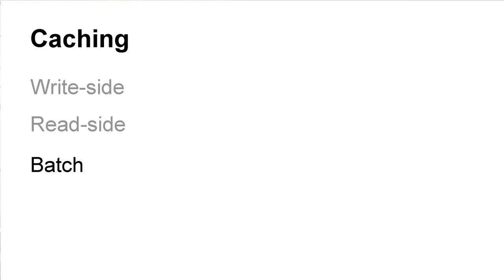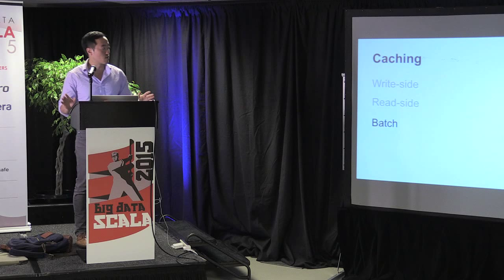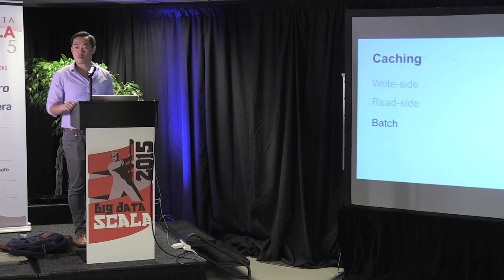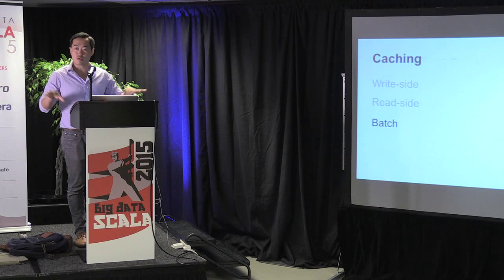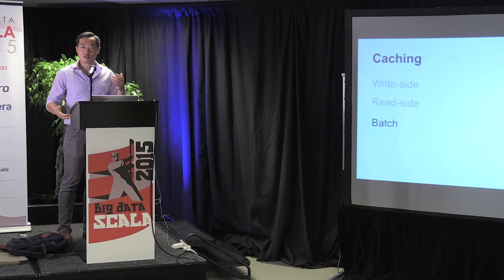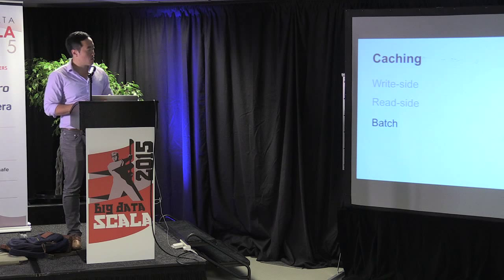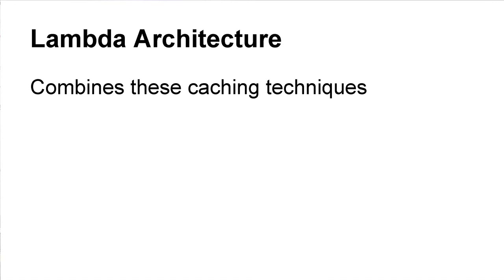Instead, we have batch caching. With batch caching, you pre-compute all of the views. At time T, you compute the entire universe of views. It's obviously very slow, but it's horizontally scalable — you can break down the computation into individual pieces of data and scale arbitrarily. It's also safer, because every time you do this you're recomputing the world from scratch. This is probably as close as we'll get to that ideal pure function. Batch is really great.